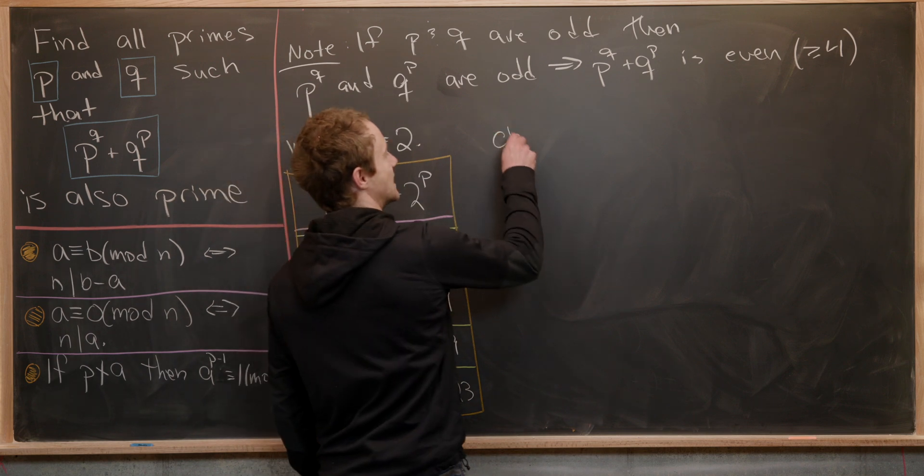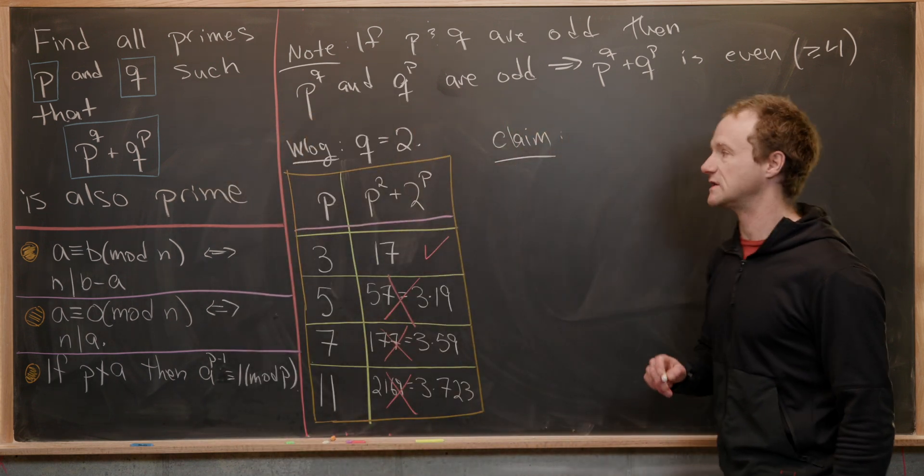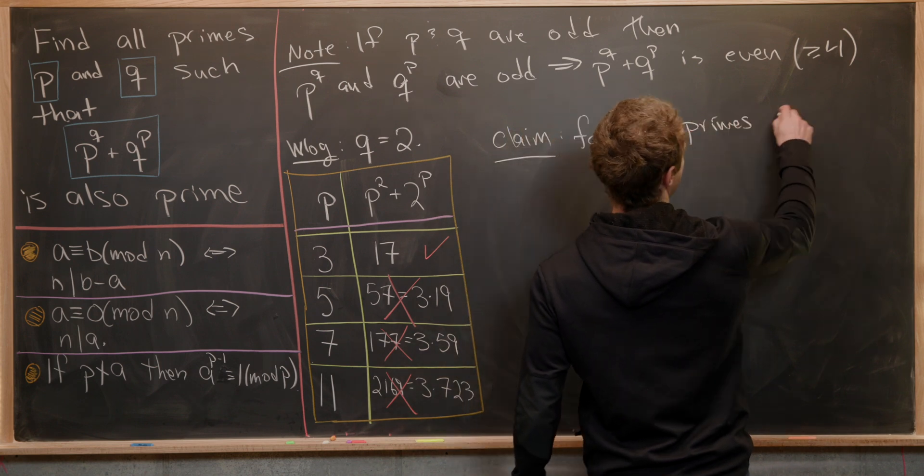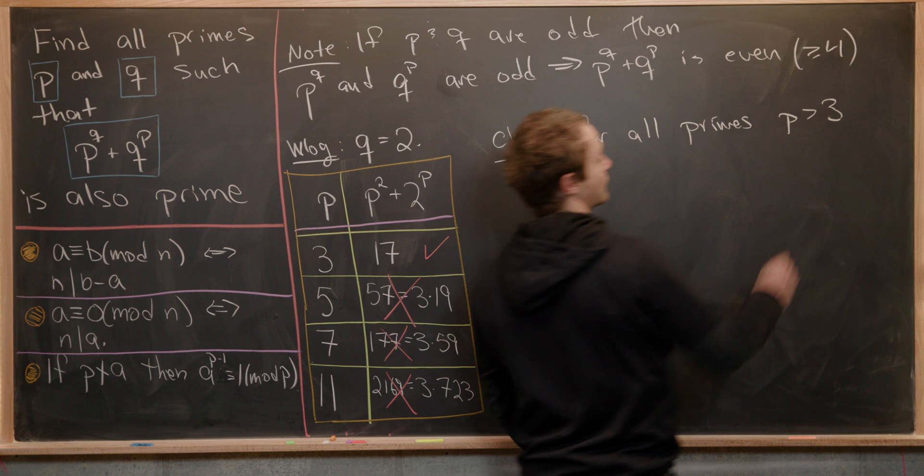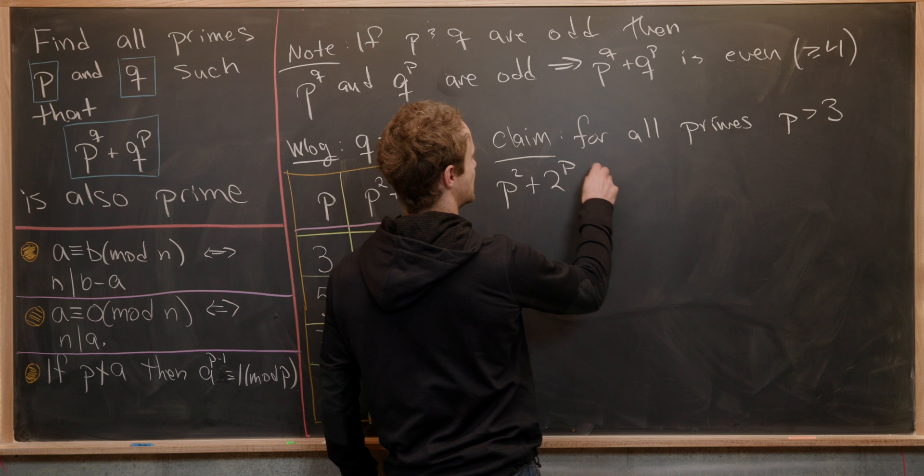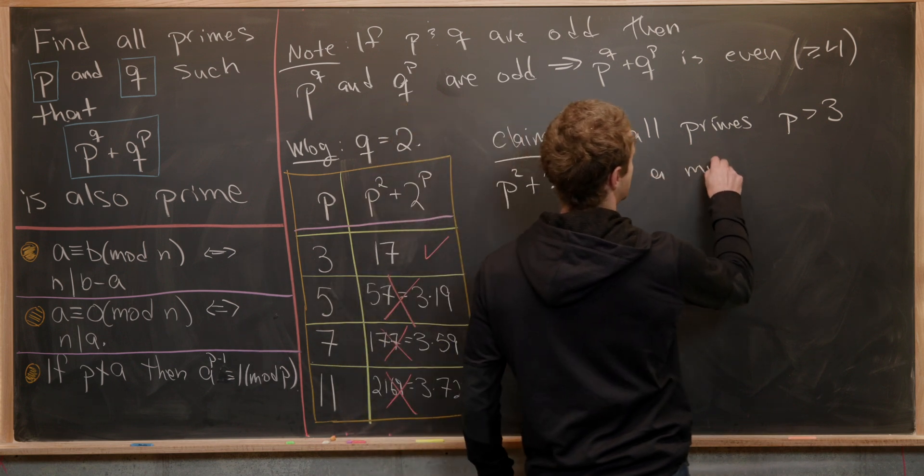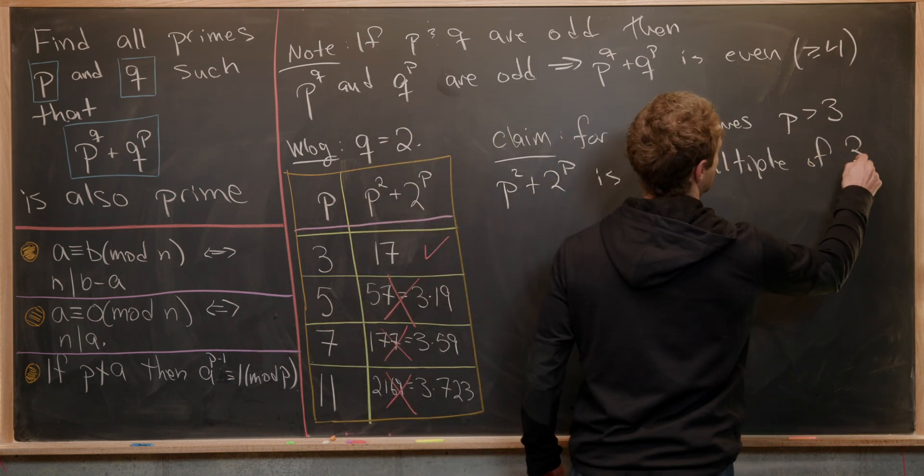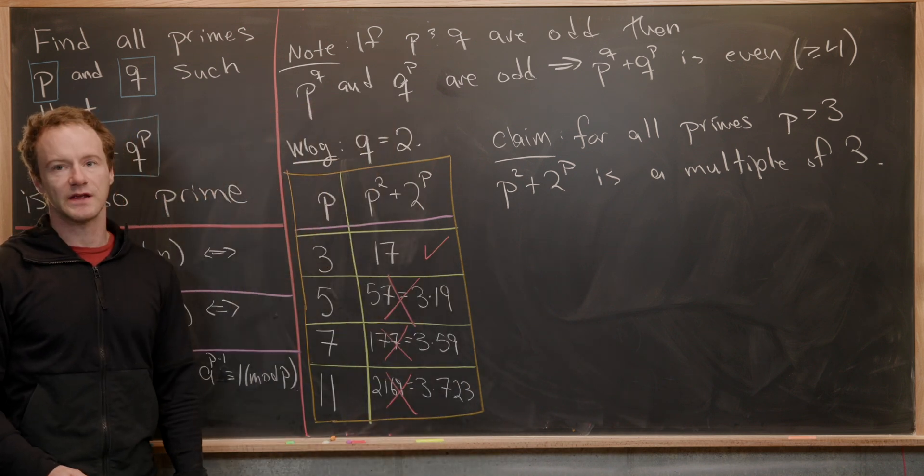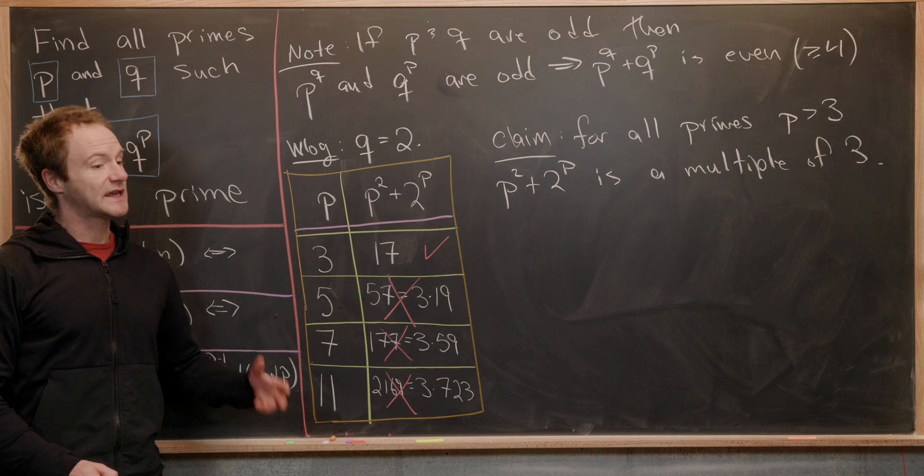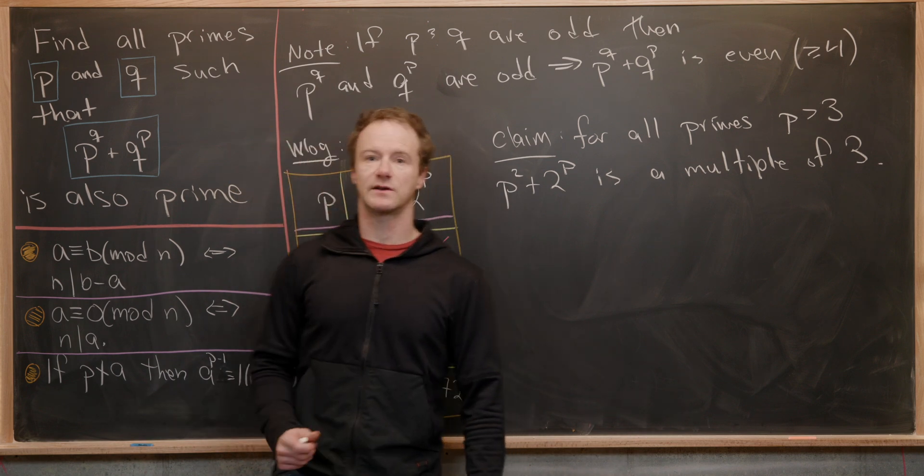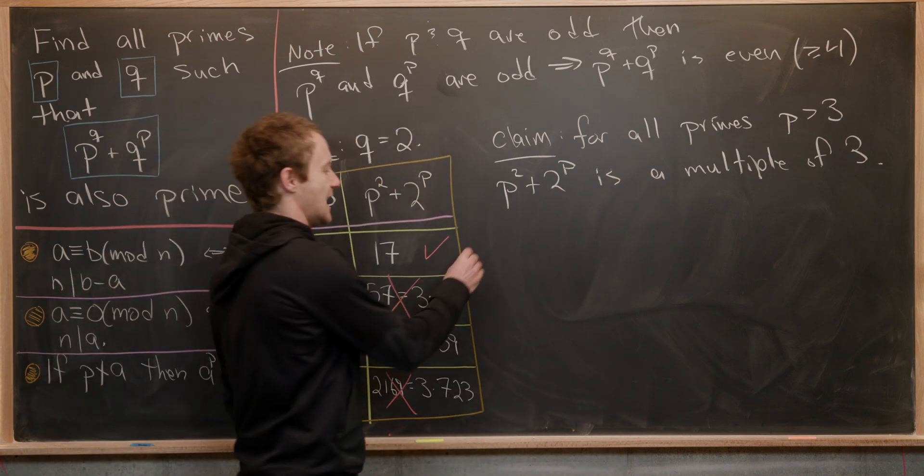So let's maybe make that claim. My claim is going to be for all primes p bigger than three, we have p squared plus two to the p is a multiple of three. And the way that we'll show that it's a multiple of three is calculate its residue modulo three using Fermat's little theorem. So let's go ahead and do that.